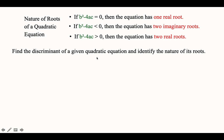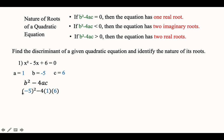Let's find first the discriminant of a quadratic equation, then identify the nature of its roots. Given number 1: x squared minus 5x plus 6 is equal to 0. Step 1: identify a, b, and c. Here a is 1, b is negative 5, c is positive 6. Write down the discriminant b squared minus 4ac and substitute: negative 5 squared minus 4 times 1 times 6. Negative 5 squared is 25, and negative 4 times 1 times 6 is negative 24, so 25 minus 24 is positive 1. Since positive 1 is more than 0, it falls in our third indicator: this quadratic equation has two real roots.